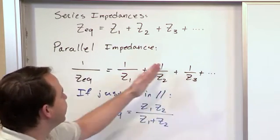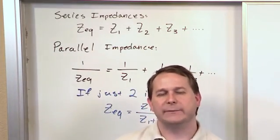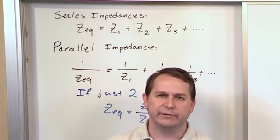The full formula is useful if you have three, four, five, or six items in parallel with one another. That's how you would do it.